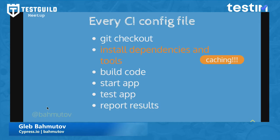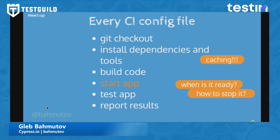Every CI config file kind of looks like this. You have to check out your code, install all the dependencies and tools and libraries, build your code into some artifact or website, start an application in order to test it, run the tests, and then report results. Immediately problems arise: you have to configure caching, otherwise every build will reinstall everything from scratch making it long and slow. You have to know when your application is actually ready to receive tests.